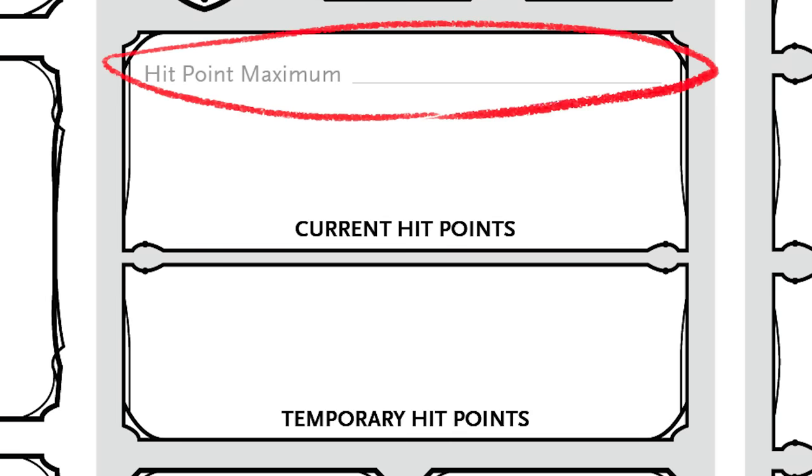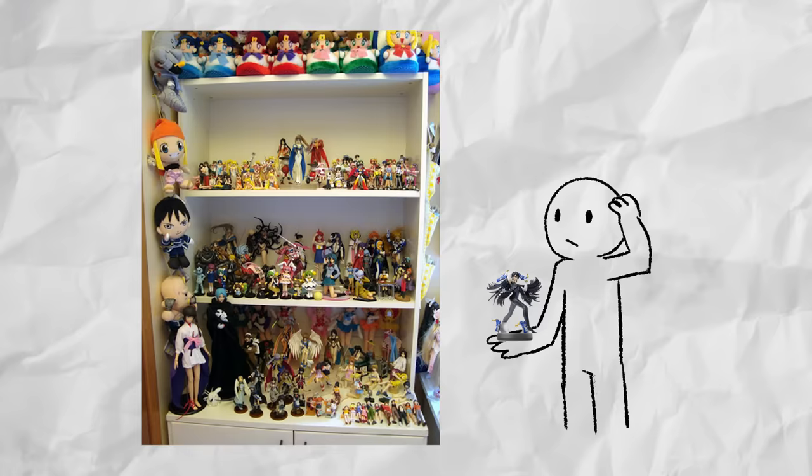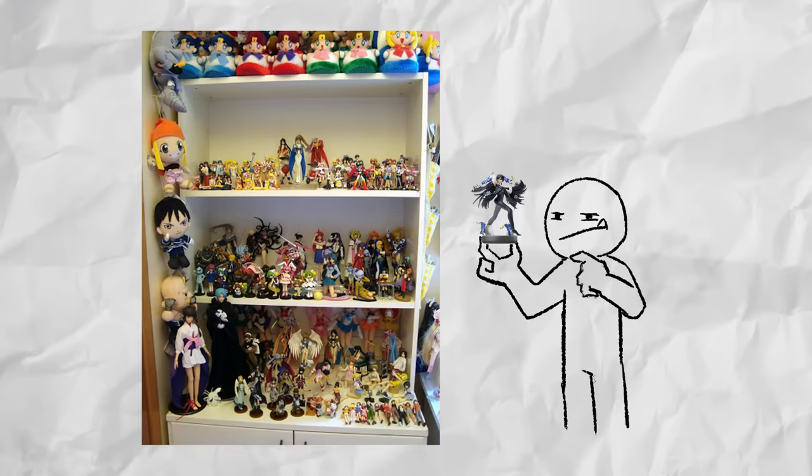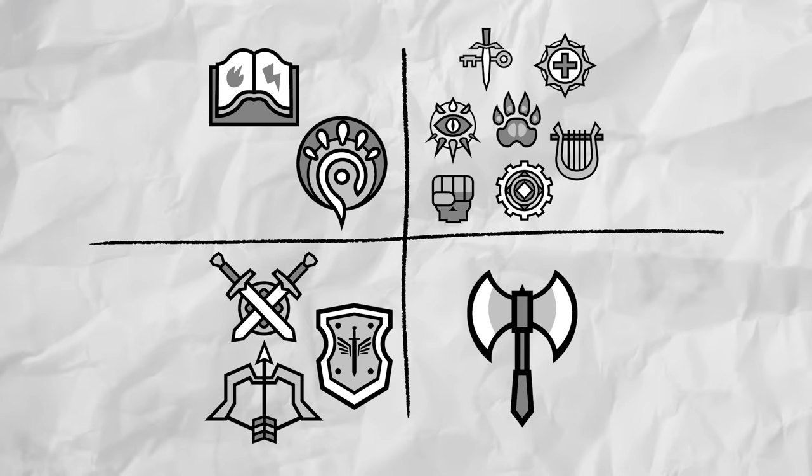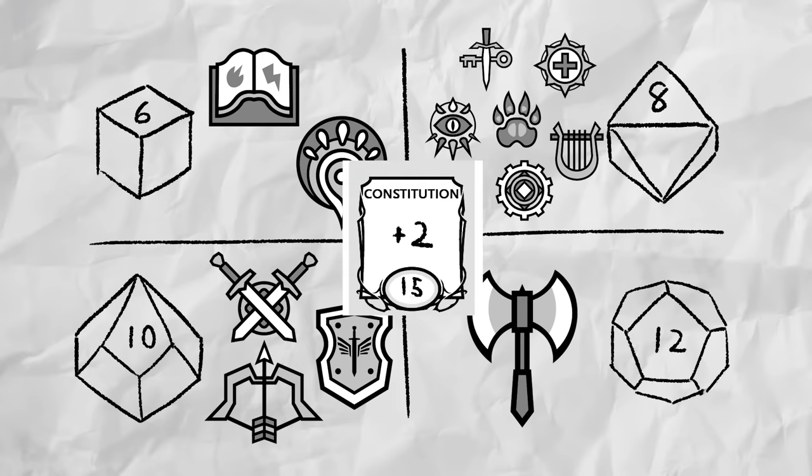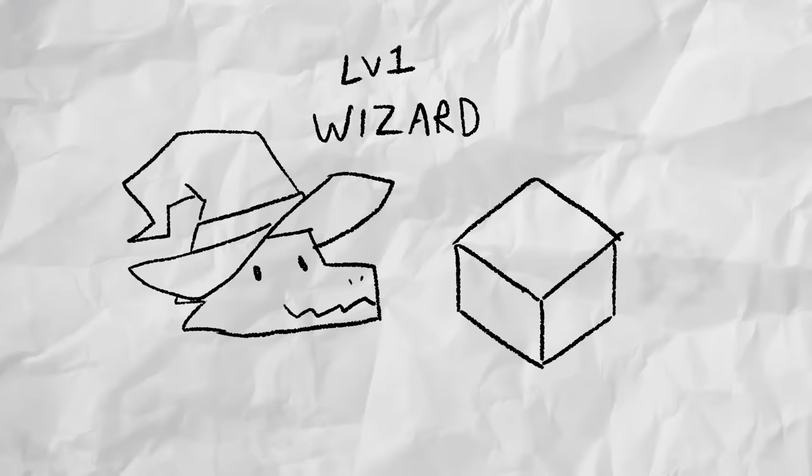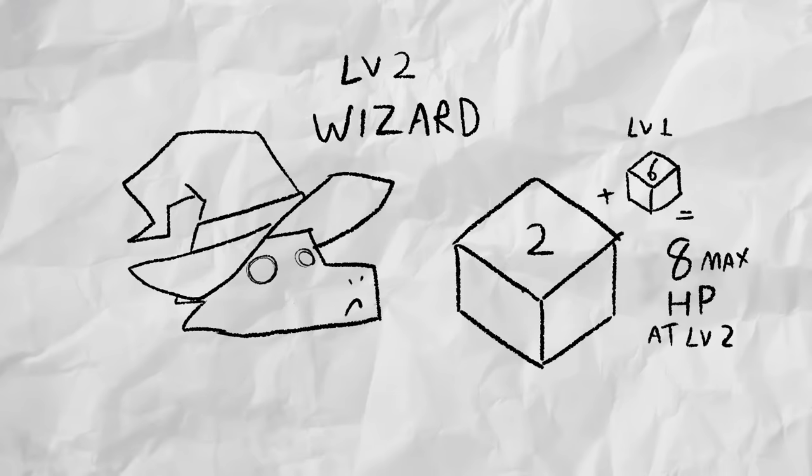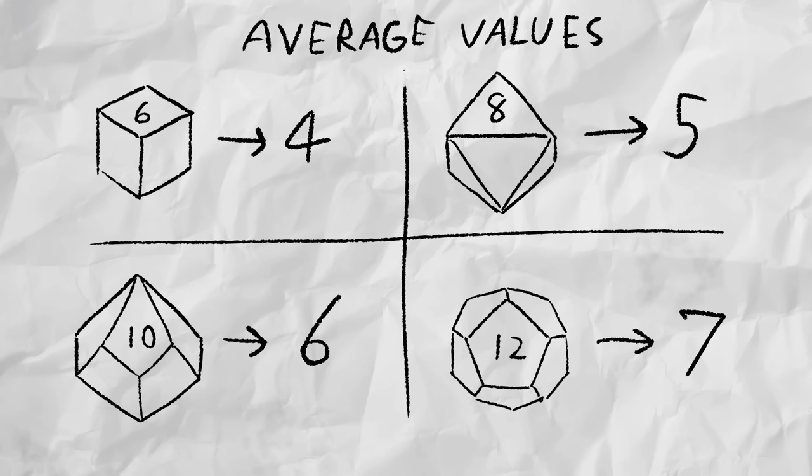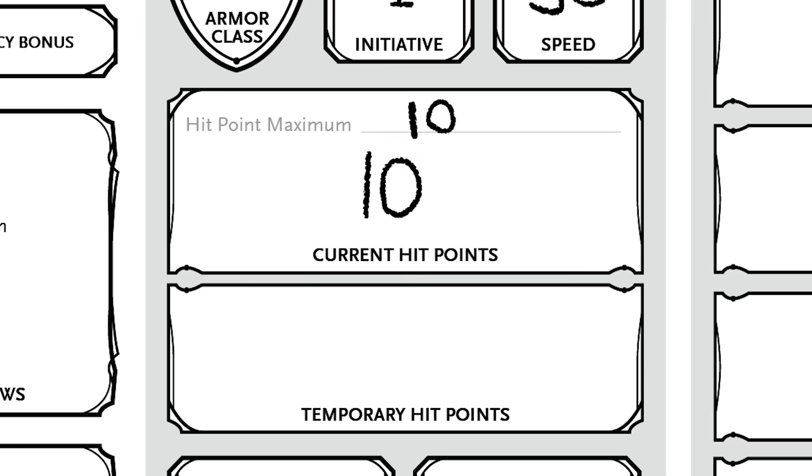Below that are the hit points: maximum, current, and temporary. Your maximum hit points is determined by your class, each one having its own size of hit die plus your constitution modifier. At first level you always receive the highest possible roll for hit points. But for every consecutive level, you can either roll for it or take the coward's way out and take the average increase instead. And then your current hit points are the amount of blood you still have inside your body at the moment. Reach zero and your character dies.